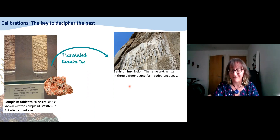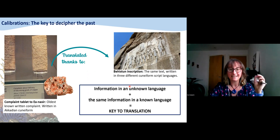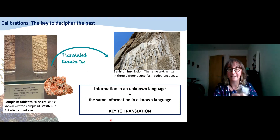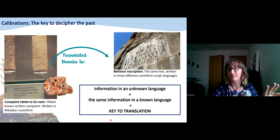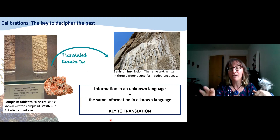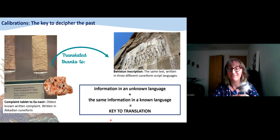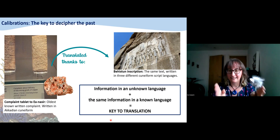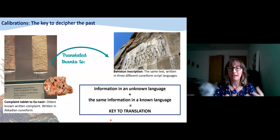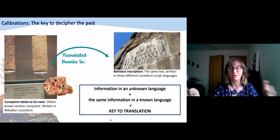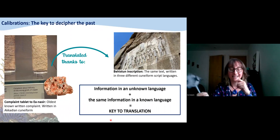The Behistun inscription is equivalent to the Rosetta Stone in ancient Egyptian hieroglyphics, which is probably more famous. Basically, it's the same text written in three different script languages. As long as we are able to understand one of those languages, then we can translate the other two languages that appear in this inscription. And that's how we were able to translate the complaint tablet to Ian Nassir and many other archaeological and historical archives. That's how we can understand how ancient civilizations worked — what was the culture, what was life like.